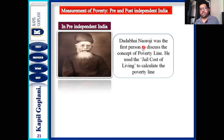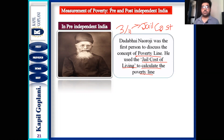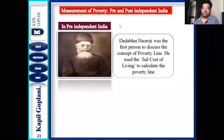Pre-independence, the person who first thought about poverty and calculated it was Dadabhai Naoroji, a very famous economist of that time. He was the first person to discuss the poverty line and used the jail cost of living to calculate it. According to him, three-fourths of the jail cost of living was the poverty line — as per Dadabhai Naoroji's calculation.